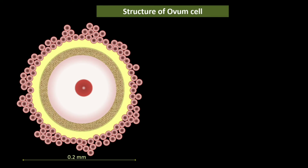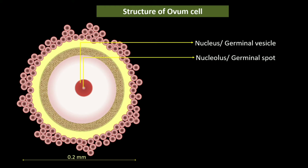The human ovum is spherical, about 0.2 millimeters in diameter, and embedded in the follicles. The ovum has a nucleus or germinal vesicle, a nucleolus or germinal spot, ooplasm, zona pellucida, and the outermost corona radiata. Let's learn more about the different parts of the ovum.